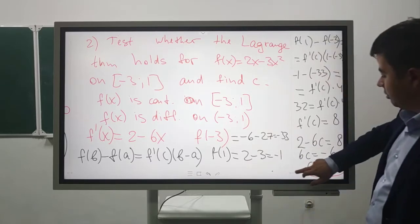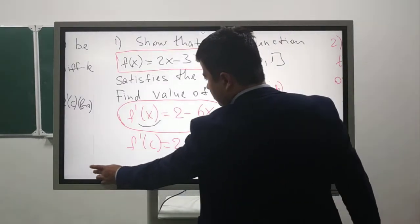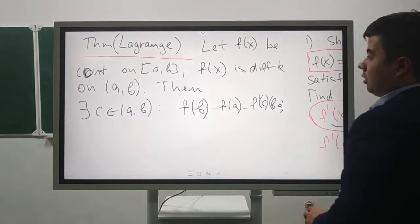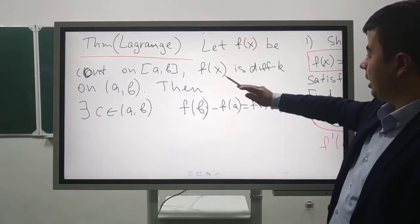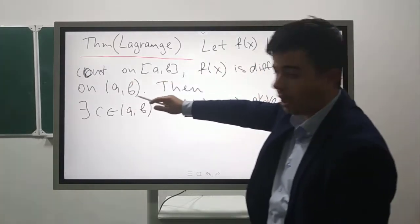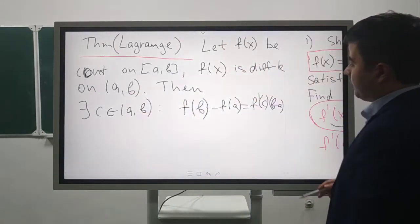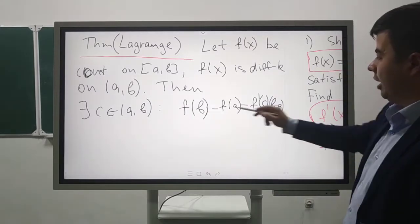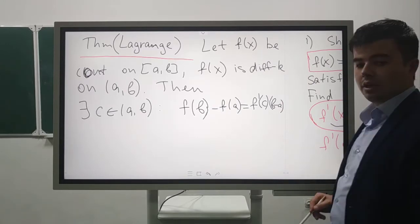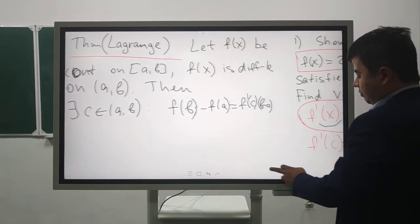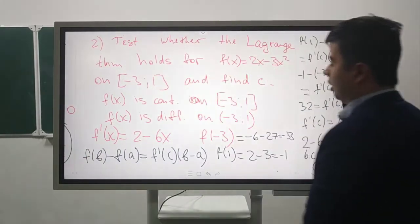Let's recall the Lagrange theorem. Let f(x) be continuous on [a, b] and differentiable on the open interval (a, b) without the endpoints. Then there exists c from (a, b), defined by: f(b) - f(a) = f'(c) · (b - a). We should show it satisfies the Lagrange theorem and find c.